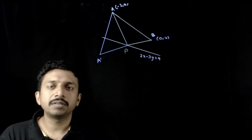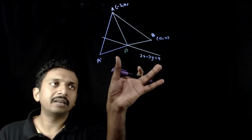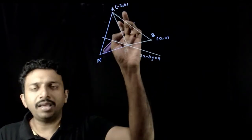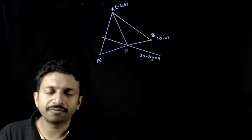So, welcome students. In this question you are given a line 2x minus 3y equals 9 and point A(-2, 0) and point B(0, 4).